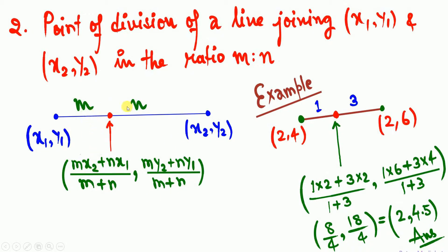In the denominator, simply add the sum of the ratios, m plus n. In the numerator, cross multiply: for the x-value, it is m times x2 plus n times x1; for the y-value, it is m times y2 plus n times y1. For example, a line has endpoints (2, 4) and (2, 6) and is divided in the ratio 1 to 3. Substituting: (1×2 + 3×2)/(1+3) for the x-coordinate.